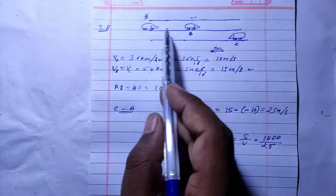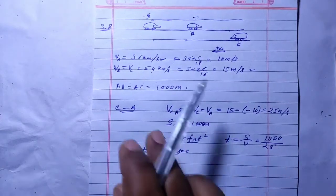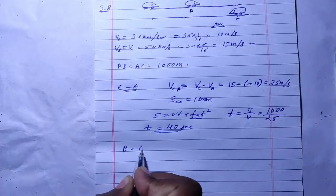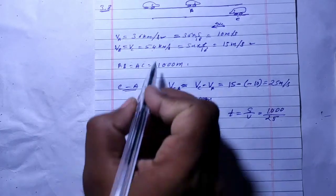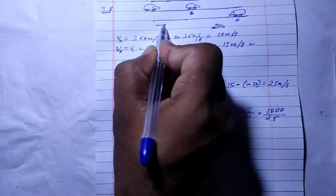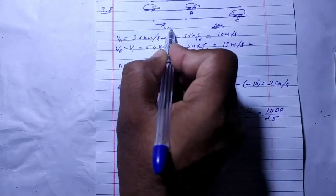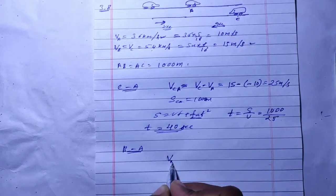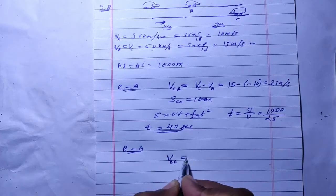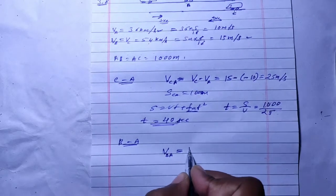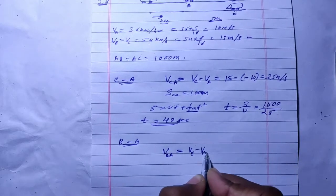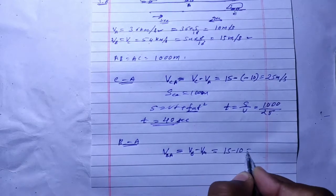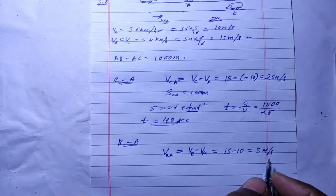Now looking at B to A, I take the right direction as positive. The velocity of B with respect to A equals velocity of B minus velocity of A. Since both velocities are positive in the right direction, we have 15 minus 10, which equals 5 meters per second.